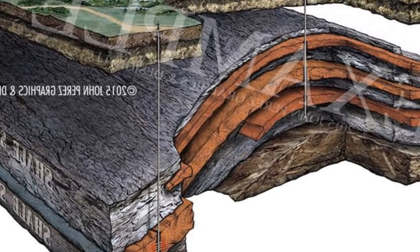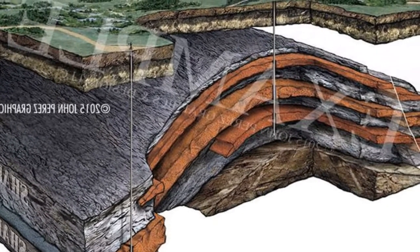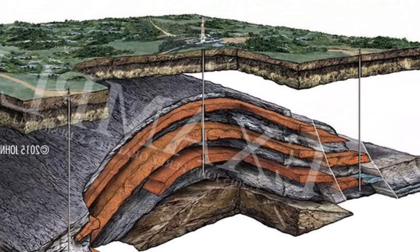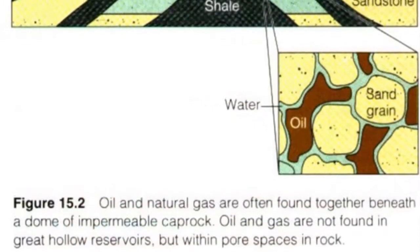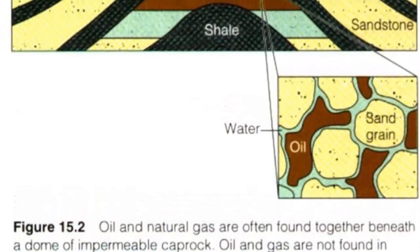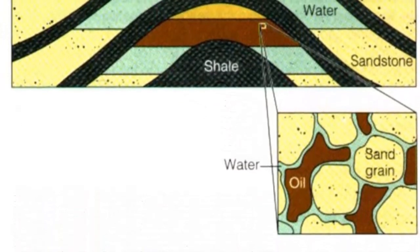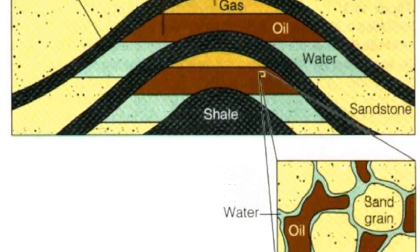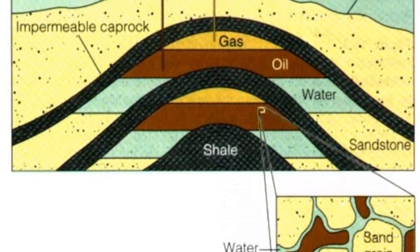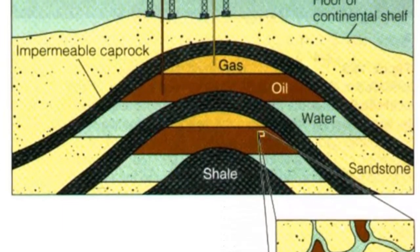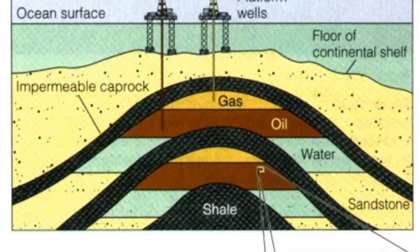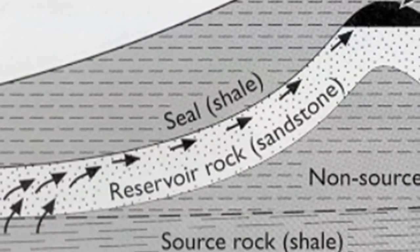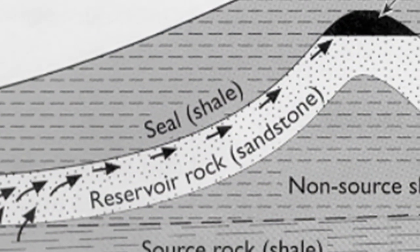Several geologic structures may act as oil traps, but all have two basic conditions in common. One, a porous permeable reservoir rock that will yield petroleum and natural gas in sufficient quantities to make drilling worthwhile. And two, a cap rock such as a shale that is virtually impermeable to oil and gas. The cap rock blocks the upwardly mobile oil and gas and keeps the hydrocarbons from escaping at the surface.